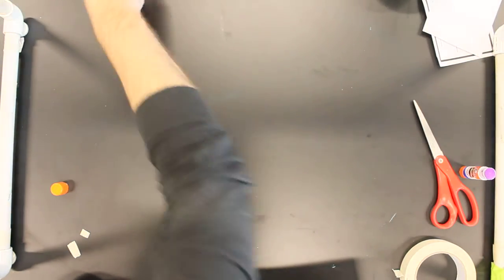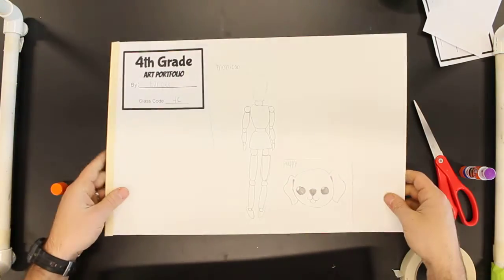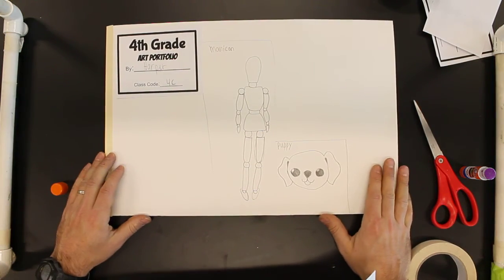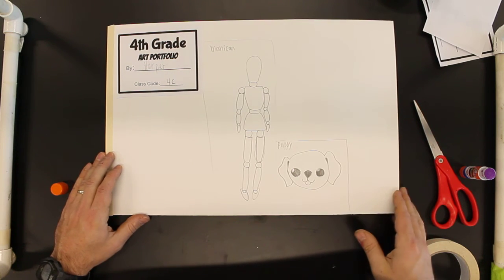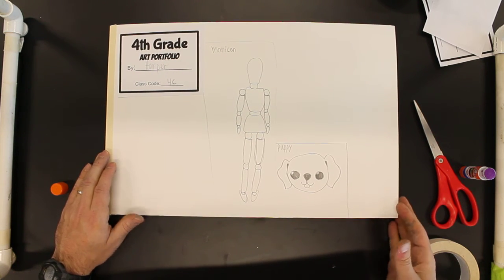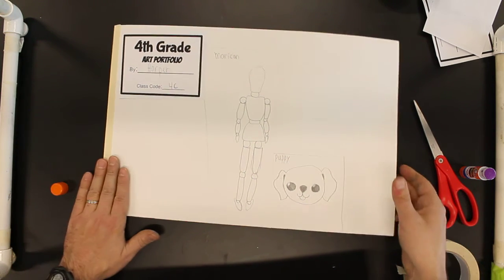From a fourth grade class, here's Harper from 4C. She really likes to draw mannequins, so she's drawing a mannequin and she has a puppy on the front. Now this is not something that needs to be finished in one day - it's something you can come back to later on in the year to add a little color if you get done with projects early.